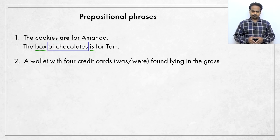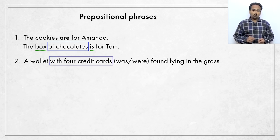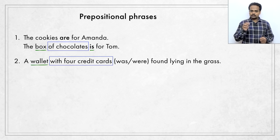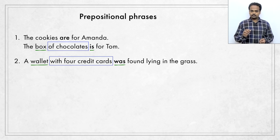Here's another example. A wallet with four credit cards was or were found lying in the grass. Which is correct? Did you identify the prepositional phrase in this sentence? The phrase is with four credit cards. So, what thing had four credit cards inside? It was the wallet. So, wallet is the subject of the sentence. The credit cards are not the subject. Wallet is a singular noun. So, a wallet with four credit cards was found lying in the grass. If the sentence was just about credit cards, we might say four credit cards were found lying in the grass. But here, since the real subject is wallet, we say was.